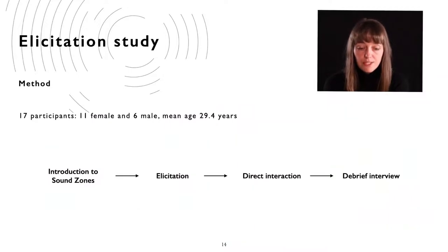We recruited 17 participants with no prior experience with sound zone systems. We then started each trial with non-verbal introduction to the sound zone system by letting participants explore the space. Then we introduced each participant to a shape and movement, and we asked them to perform an interaction that would match the visualization using either the volume or the position controller. In a third phase, we asked participants to freely explore shapes and movements through interacting with the controllers. And finally, we conducted debrief interviews.